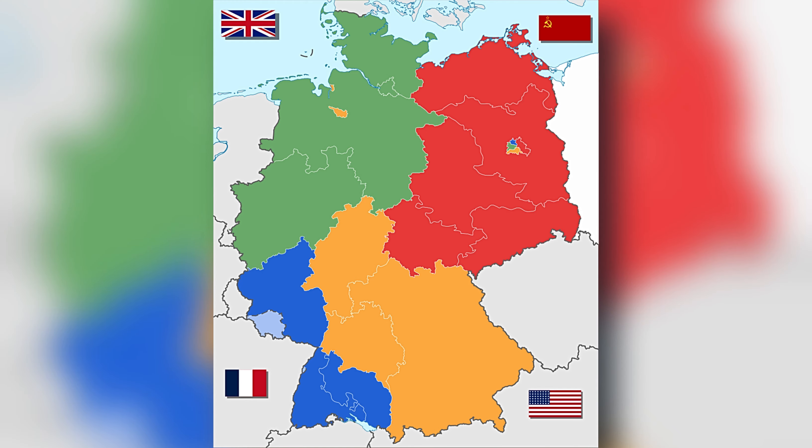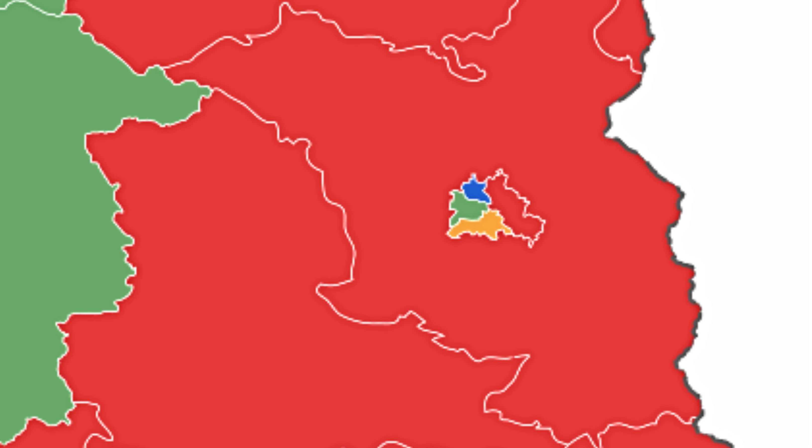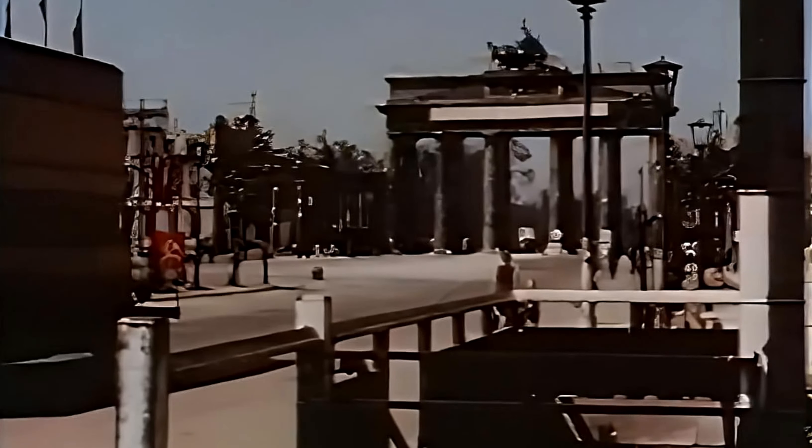To understand the fall of the Berlin Wall, we first need to understand why it was built. After World War II, Germany was divided into four occupation zones controlled by the United States, the United Kingdom, France, and the Soviet Union. Berlin, the capital, was also divided, though it was deep within the Soviet-controlled East. As Cold War tensions grew, Berlin became the focal point of a larger ideological battle between East and West.